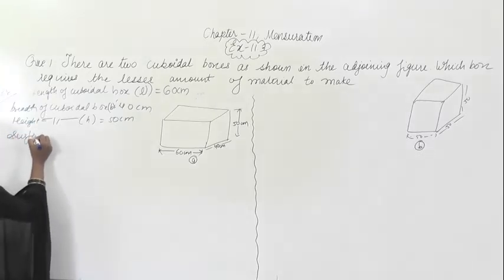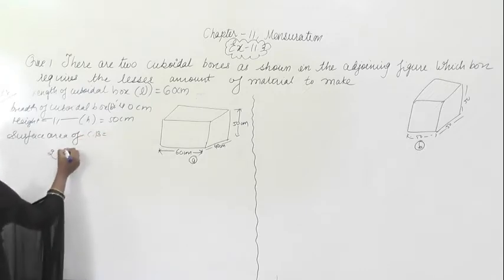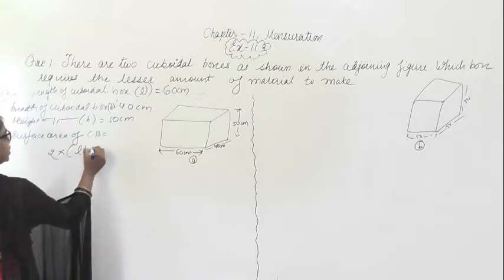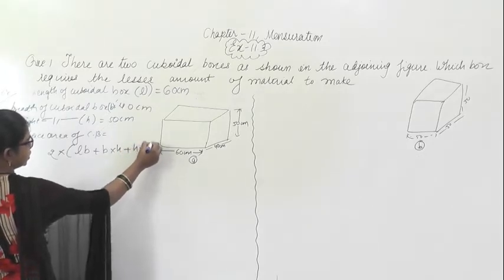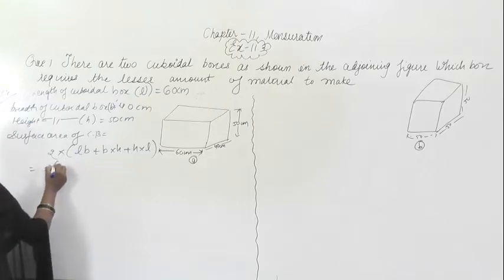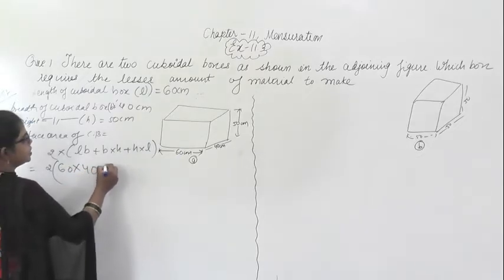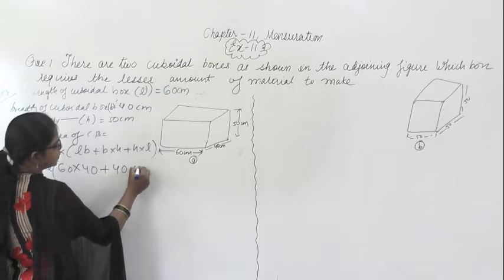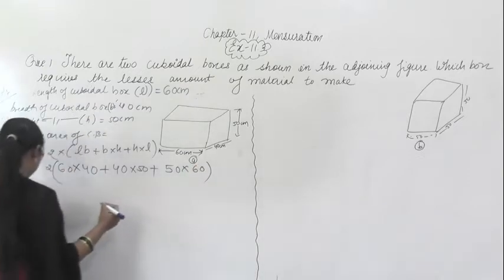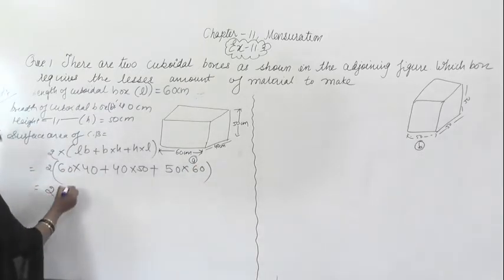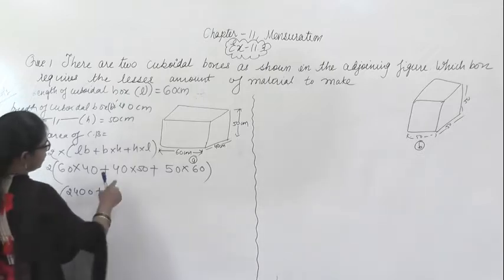The formula for the surface area of a cuboidal box is equal to 2 into (length × breadth + breadth × height + height × length). Substituting: 2 into (60 × 40 + 40 × 50 + 50 × 60). That gives us 2 into (2400 + 2000 + 3000).